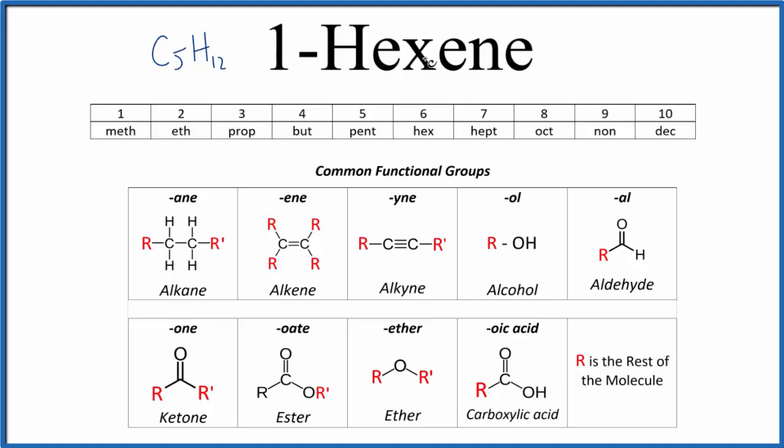When we look at the name 1-hexene, this E-N-E on the end tells us we have an alkene. They end in E-N-E. So we're going to have a double bond between two carbons.